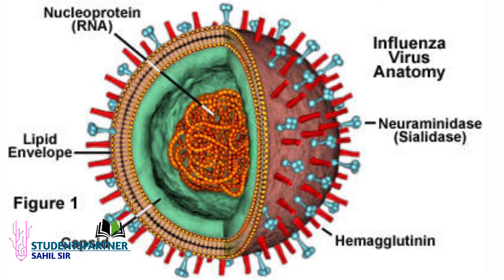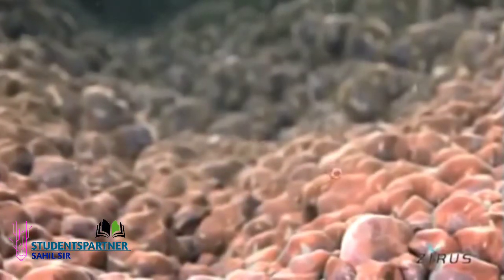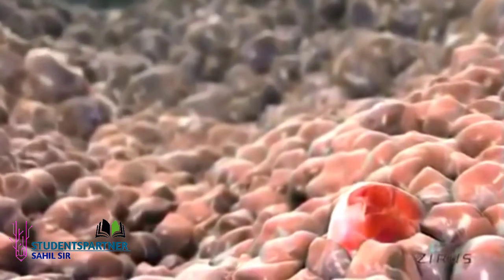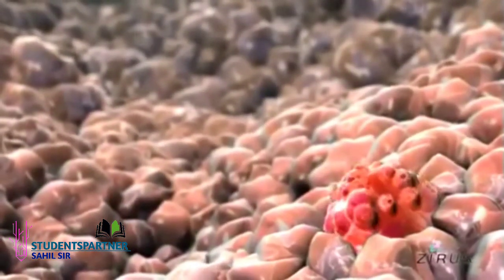Viruses lack any membrane that supports life. Only a few parts are found inside a virus. You can see in this figure what parts a virus contains — this is approximately what the shape of a virus looks like. In this animation, you can see how viruses spread when they enter cells.